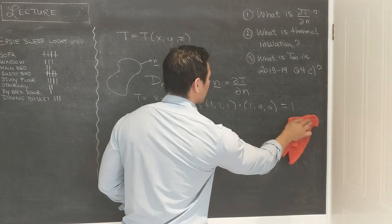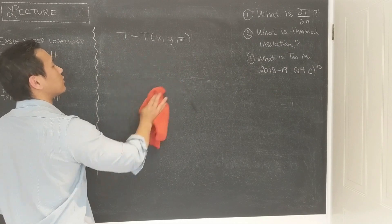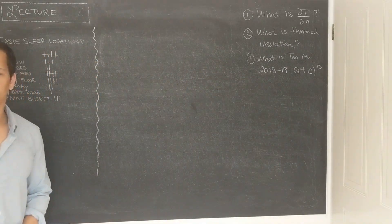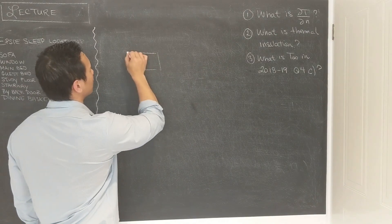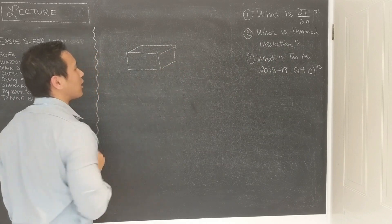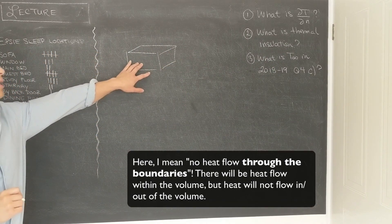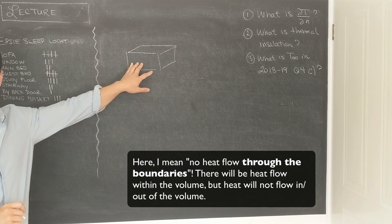The next item is what does thermal insulation mean? Thermal insulation simply means that there's no heat flux. So imagine you have some kind of object with a cooler, and the material for this cooler is designed in such a way that there is no heat flow. That's what you mean by thermal insulation.